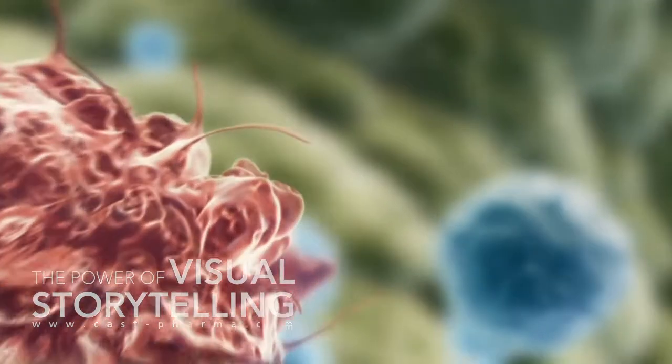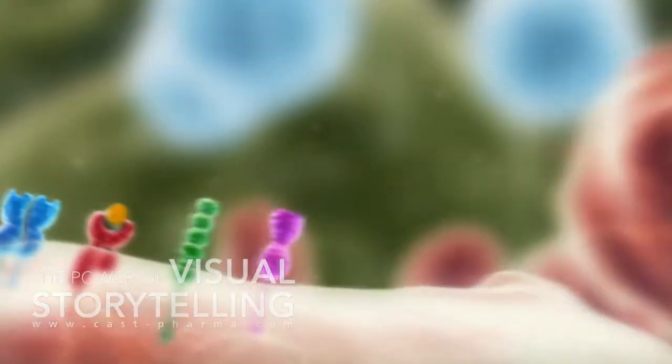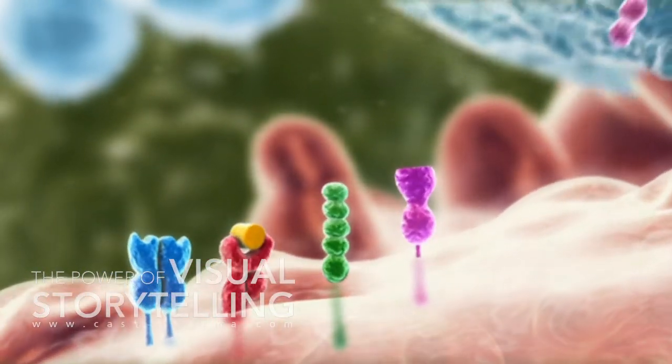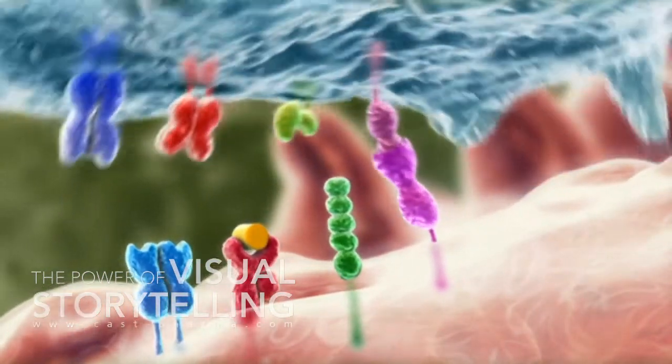After migration into the original lymph node, a large number of T cells interact with a tumor associated antigen on the surface of the dendritic cell to find a match for their specific receptor.